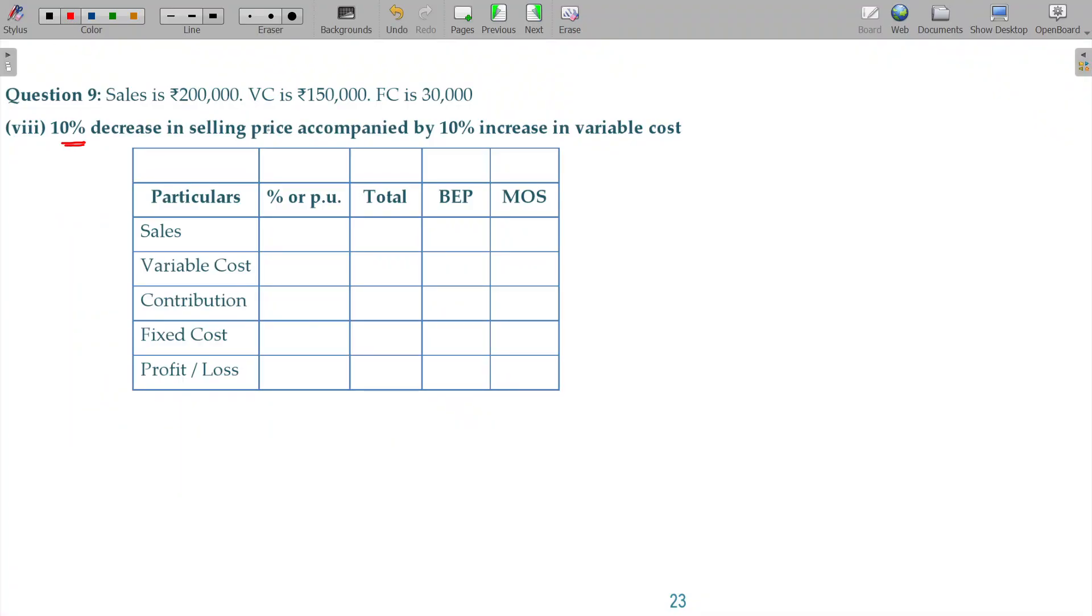Now, 10% decrease in selling price accompanied by 10% increase in variable cost. With 10% increase in variable cost, it becomes 1,65,000.